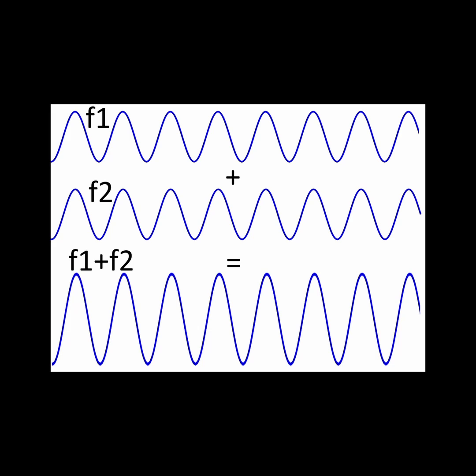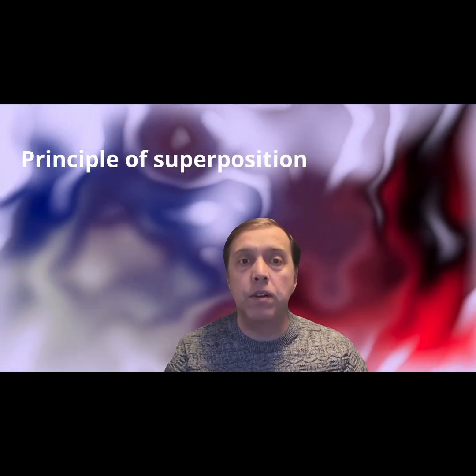The resultant wave is the sum of the two waves at each point, or f1 plus f2. Being able to sum waves together like this to see their combined effect is called the principle of superposition.